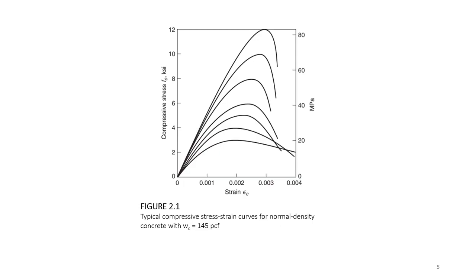One important thing to realize: the strain in the concrete at near failure — the maximum strain at the peak of compressive strength — is 0.003. This 0.003 strain will be required when we design beams and develop formulas for structural design of concrete. You must remember that the maximum compressive strain of concrete is 0.003 — remember this for your whole life. Look at figure 2.1 and understand that this 0.003 value will come up frequently.